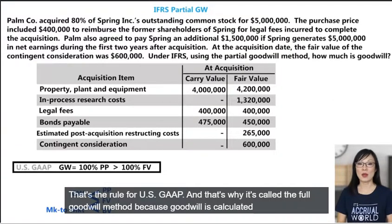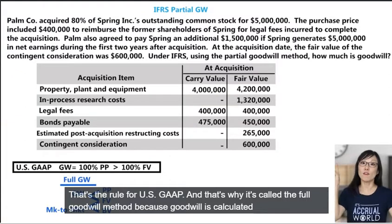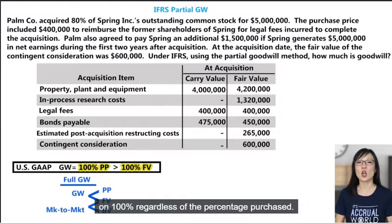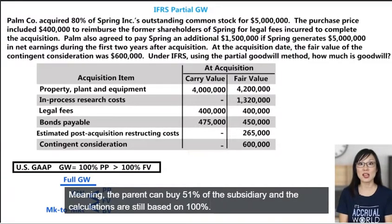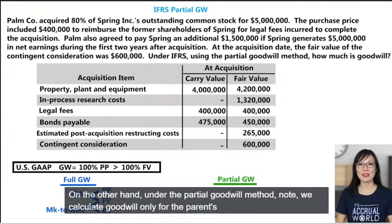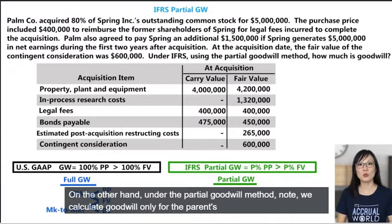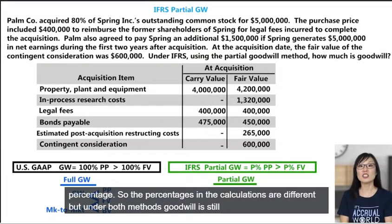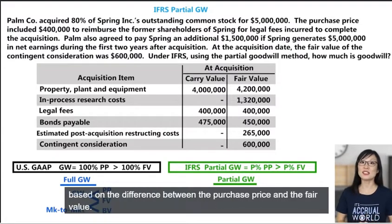That's the rule for US GAAP and that's why it's called the full goodwill method — goodwill is calculated on 100% regardless of the percentage purchased, meaning the parent can buy 51% of the subsidiary and the calculations are still based on 100%. On the other hand, under the partial goodwill method we calculate goodwill only for the parent's percentage. Under both methods, goodwill is still based on the difference between the purchase price and the fair value.